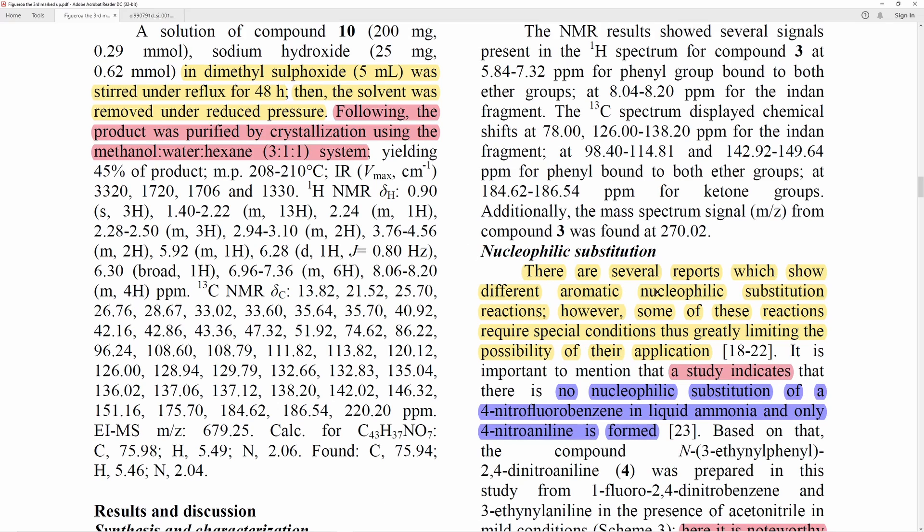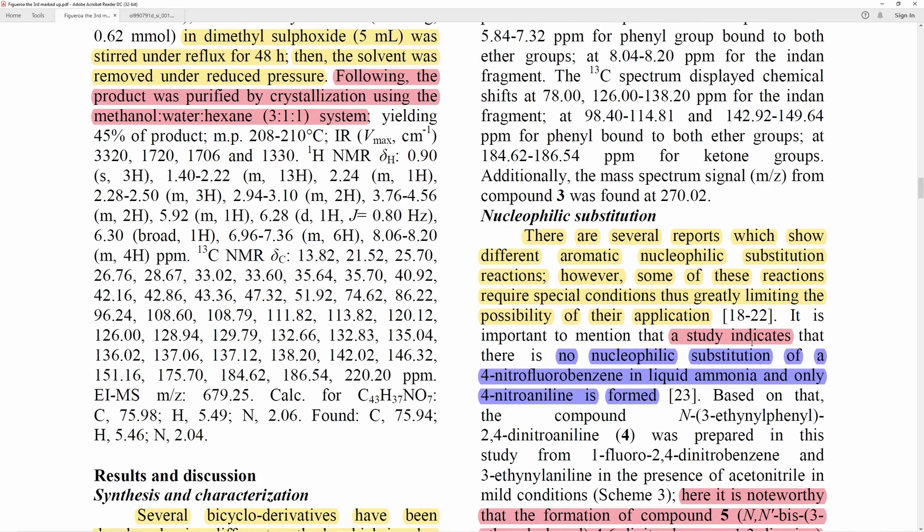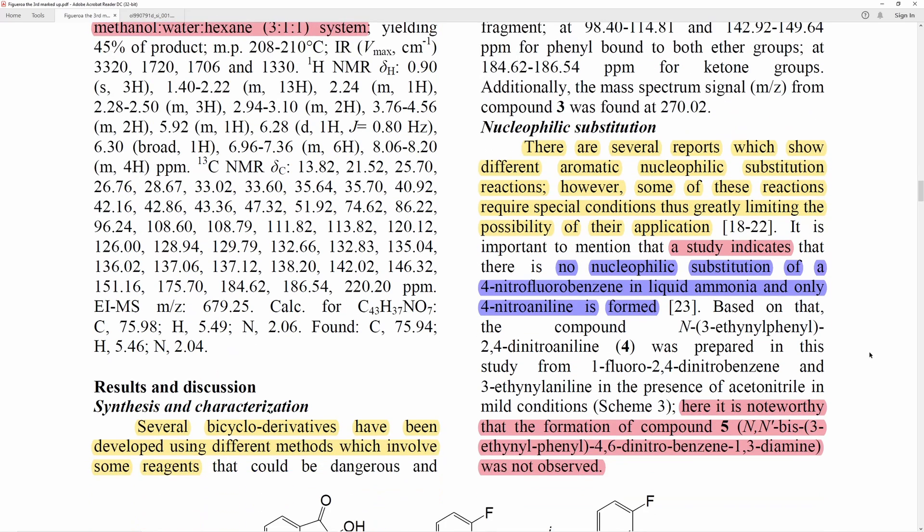There are several reports which show different aromatic nucleophilic substitution reactions. However, some of these reactions require special conditions, thus greatly limiting the possibility of their application. Again, Figueroa doesn't really tell us here what special conditions are. And he doesn't say how his chemistry is any different. So, we're just going to have to take him for his word here. But, fortunately, a study indicates that there is no nucleophilic substitution of a 4-nitrofluorobenzene in liquid ammonia. And only 4-nitroaniline is formed. So, correct me if I'm wrong here, but there is a nucleophilic substitution because the fluoride is displaced with ammonia. However, maybe in this one substrate, you can see that the nitro doesn't get displaced. However, if you look at the 18F paper that Figueroa references, you can actually see a case where you have 4-nitro-4-fluorobenzene, or rather, 4-nitro-4-chlorobenzene, and you actually do see both the chloride and the nitro getting substituted.